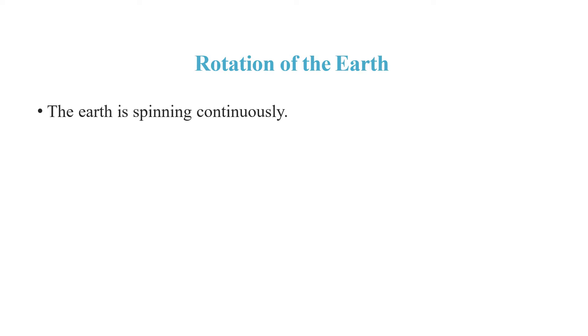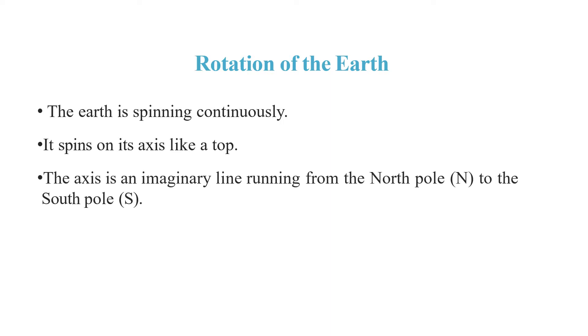Earth is spinning continuously. It spins on its axis like a top. You must have seen a top and that spins on its axis. Now what is axis? Axis is an imaginary line running from the North Pole to the South Pole.